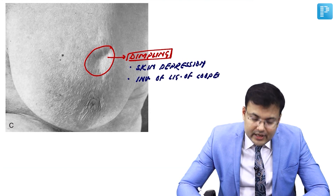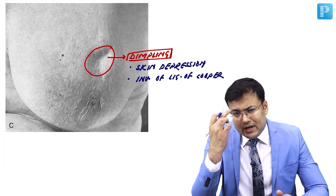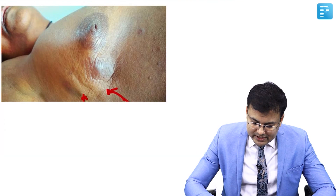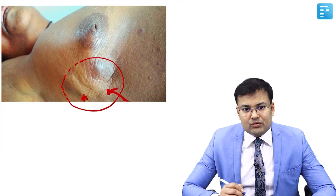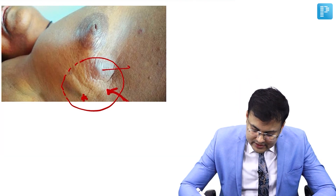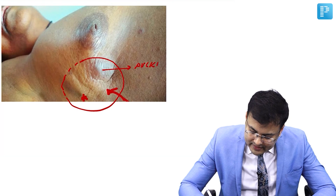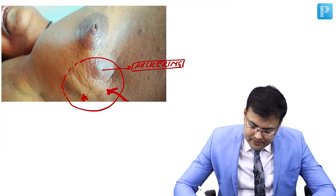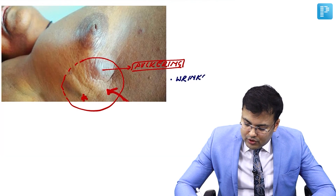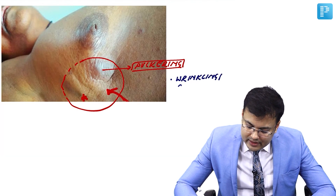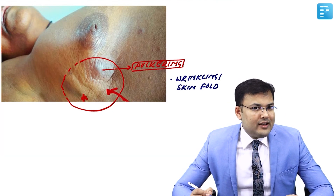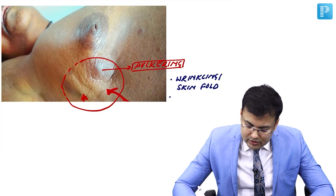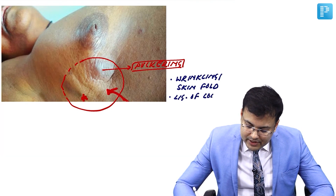In puckering, there is also involvement of the ligament of Cooper, but what happens is there is wrinkling. In this image, you can see wrinkling or skin fold — that is puckering. Both dimpling and puckering are caused by infiltration of the ligament of Cooper. You have to remember that in both dimpling and puckering, there is involvement of the ligament of Cooper.